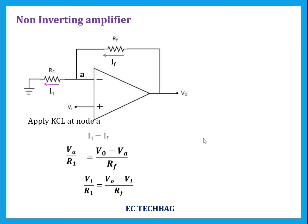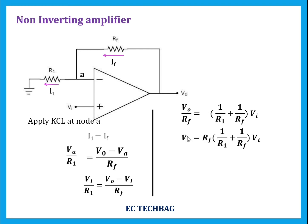Rearranging the equation gives V0 divided by Rf equals (1/R1 plus 1/Rf) times Vi. Then V0 equals Rf times (1/R1 plus 1/Rf) times Vi. Simplifying, the first term becomes Rf/R1 and the second term, Rf/Rf, equals 1. So V0 equals (1 plus Rf/R1) times Vi. The gain — output divided by input — equals 1 plus Rf/R1.